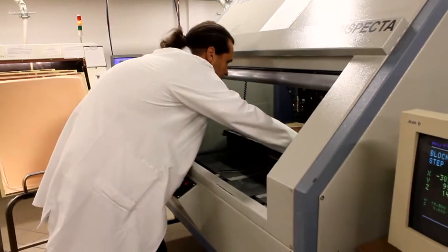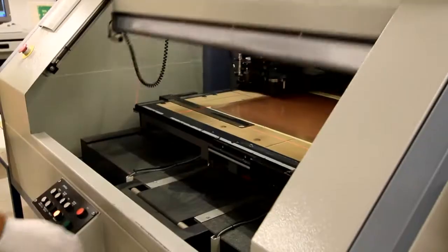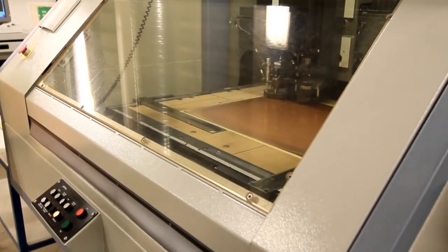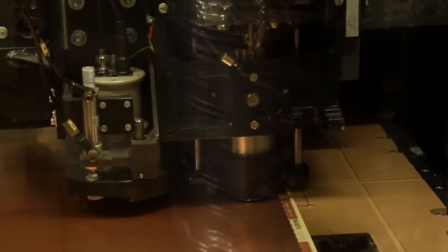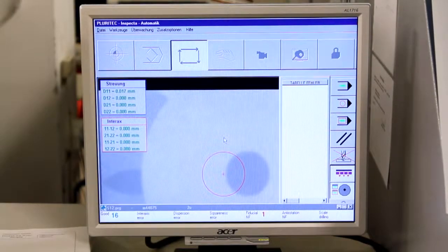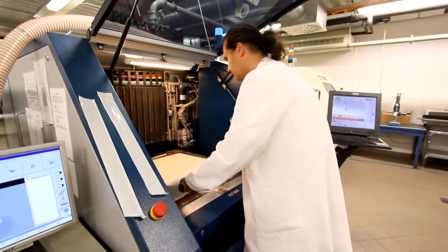Drill. Now we drill the holes for leaded components and the via holes that link the copper layers together. First we use an X-ray drill to locate targets in the copper of the inner layers. The machine drills registration holes to ensure that we will drill precisely through the center of the inner layer pads.